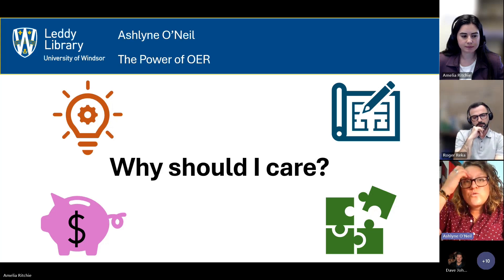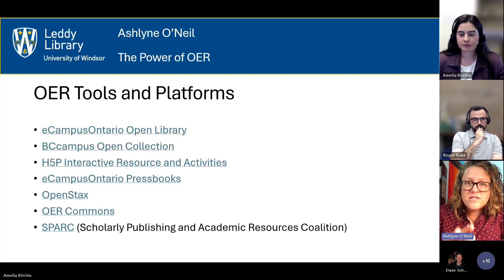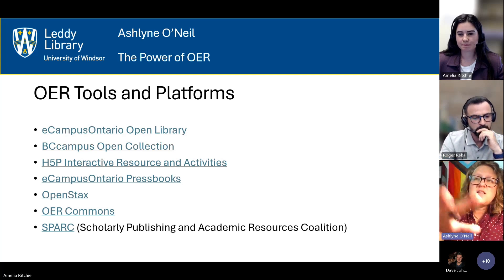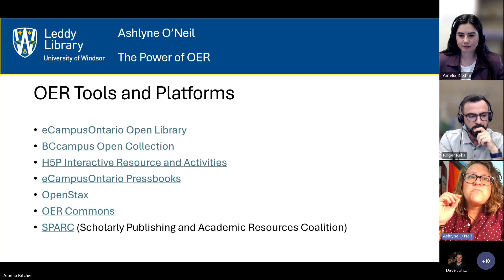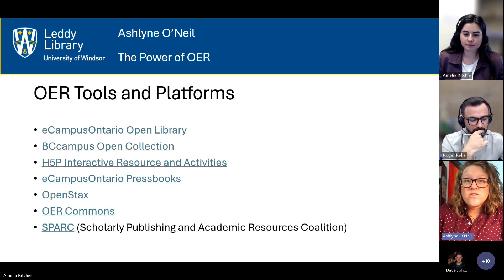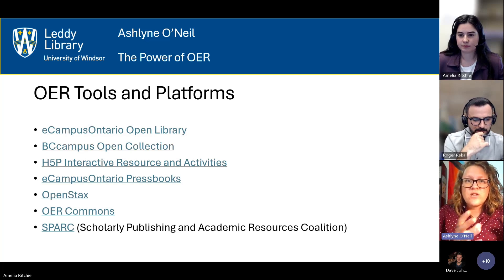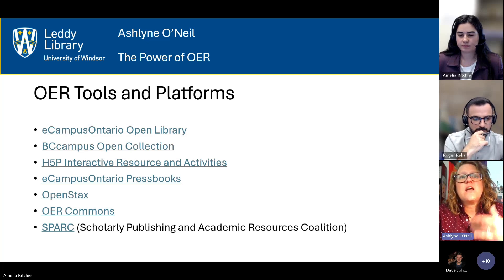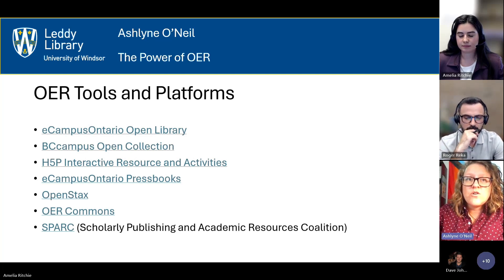Some OER tools and platforms: eCampus Ontario Open Library — all main colleges and universities in Ontario are members and can access courses, textbooks, videos, and other resources for free. BC Campus is similar but rooted in BC. H5P lets you build interactive resources — videos with embedded quizzes, timeline activities, branching scenarios, and more. Pressbooks, OpenStax, and OER Commons are all options to access and build your own open resources.